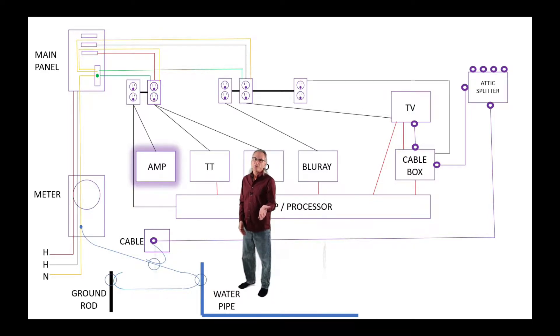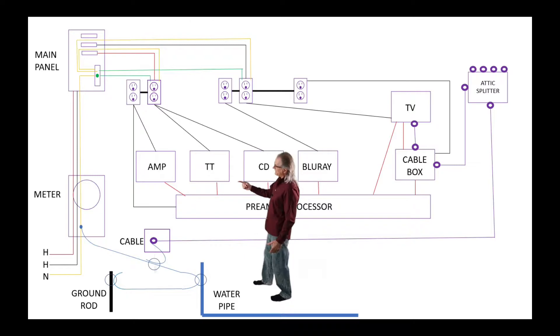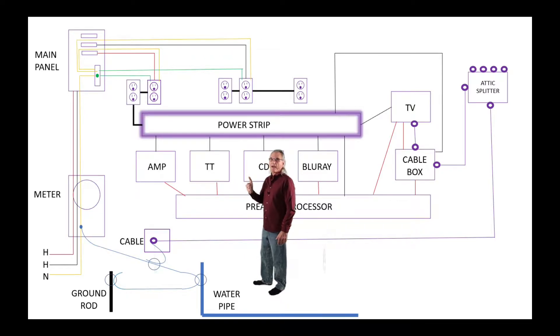For those of you with an integrated amplifier, this next step is where you could start. You want to take all of your equipment and plug it into one outlet. Use power strips. Take a power strip, plug it into one outlet, put all your gear in that power strip. Daisy-chain two power strips if you need to get everything plugged in. That gets all of your gear on the same power wire, the same neutral wire, and the same ground wire.